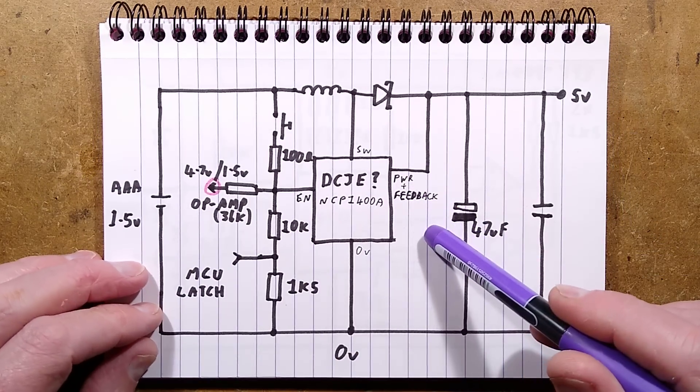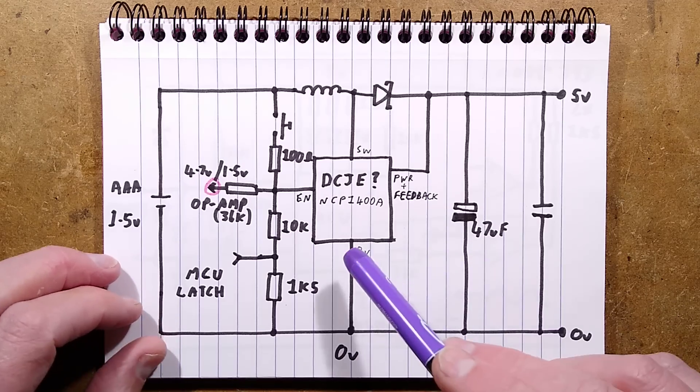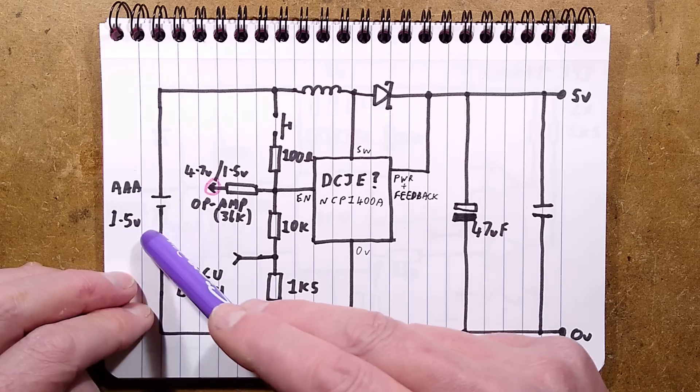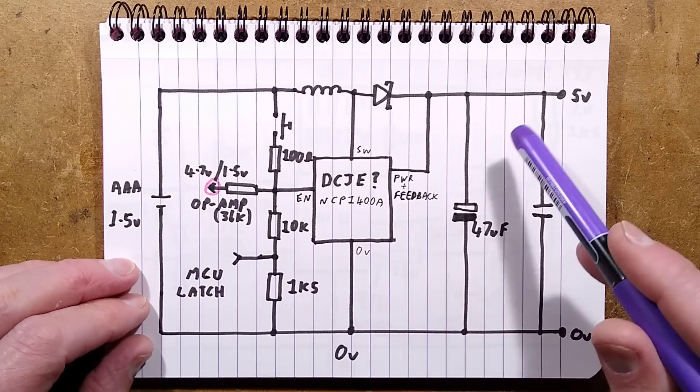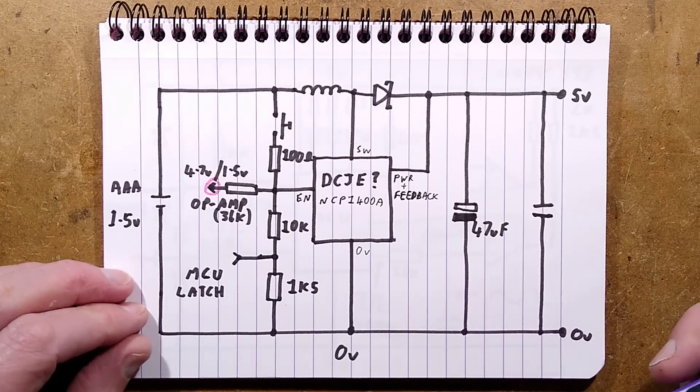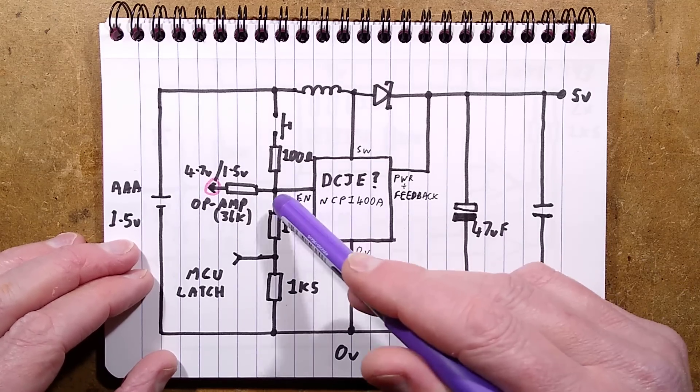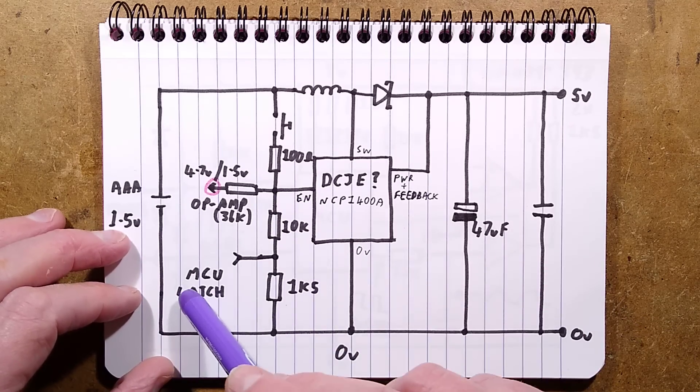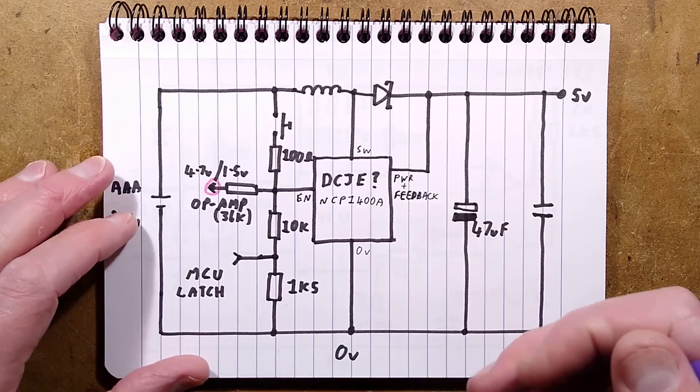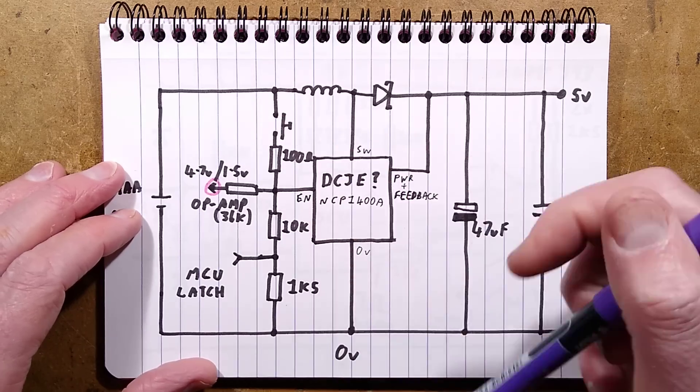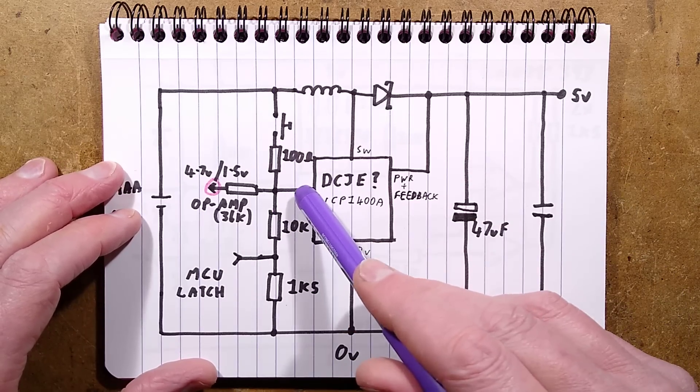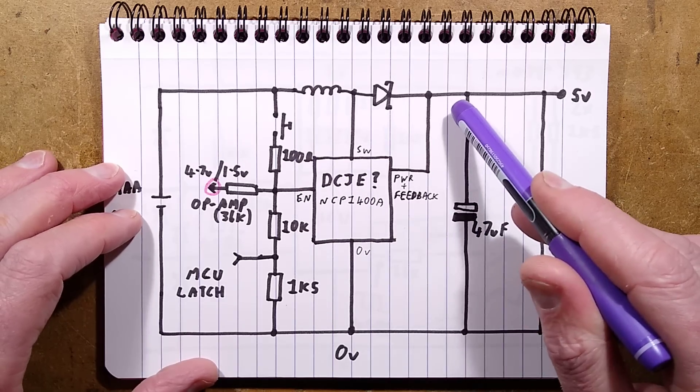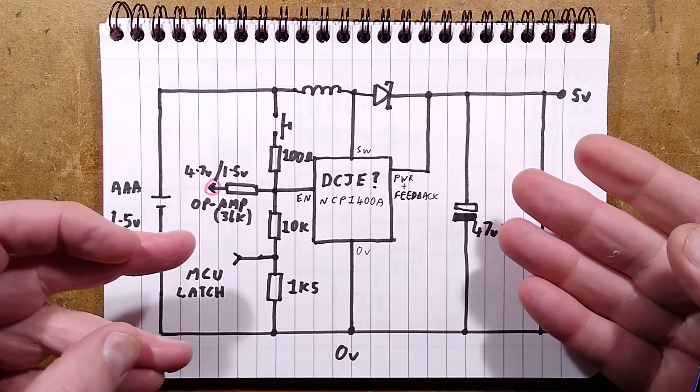We'll start off with the first page of the schematic because there's two pages. It's the power supply that steps the AAA cell 1.5 volts or less up to 5 volts for the circuitry. Initially this is off because it's got an enable pin normally pulled down by two resistors to the zero volt rail. The reason there's two resistors is the microcontroller can also turn it on. When you push this button, it initially applies power to the enable input and the circuit powers up, generating the 5 volt supply.